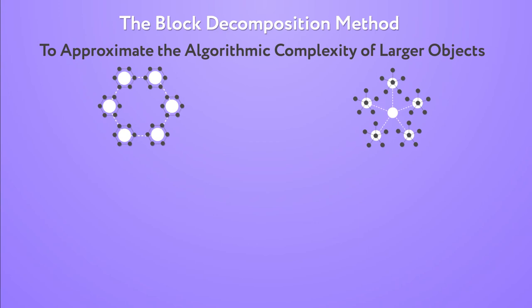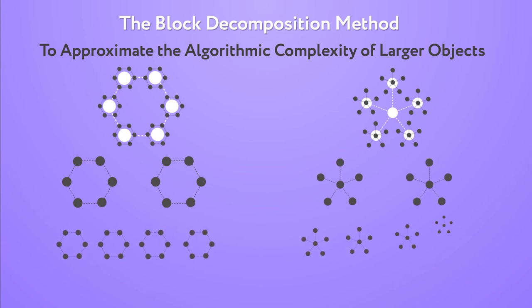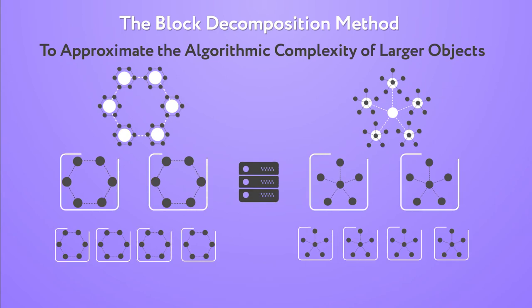What the block decomposition method does is to decompose an object into smaller pieces, which we then cleverly stick together with a formula. Every one of these pieces is each produced by a small computer program, so we know that the sequence of small computer programs produce the longer piece.